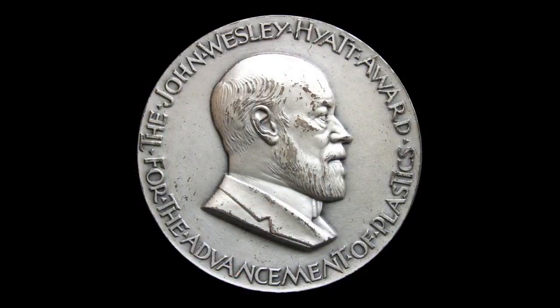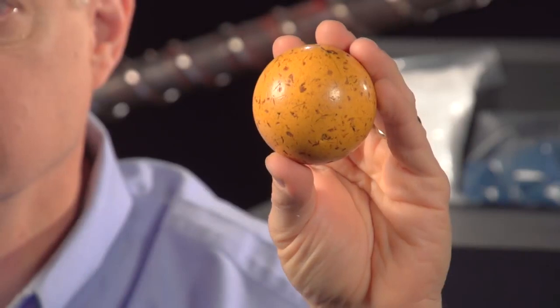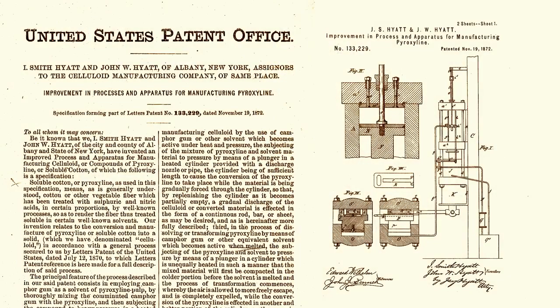This spurred John Wesley Hyatt to develop one of the first plastics, celluloid, to create billiard balls. He patented an apparatus for molding products from celluloid. This apparatus was the birth of plastic injection molding.